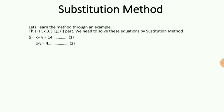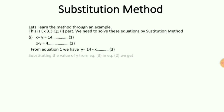Here I am trying to solve exercise 3.3 question number 1 by the substitution method. The two equations given to us are x plus y equal to 14 and x minus y equal to 4. From equation 1, I can clearly say that y will be equal to 14 minus x. This I mark as the third equation.